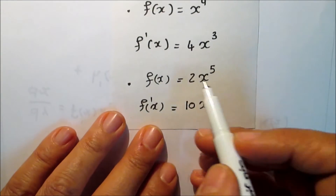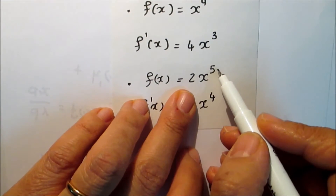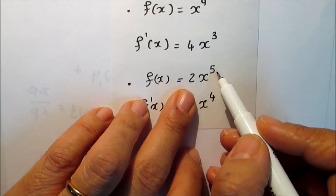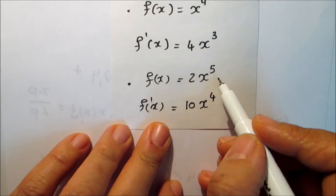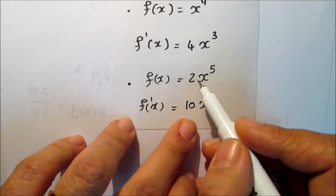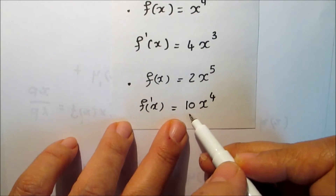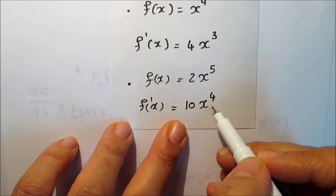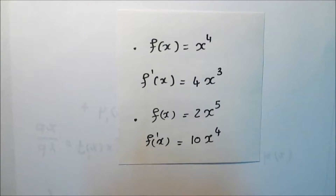Another example: if f(x) equals 2x to the power 5, then f', the first derivative, equals 2 times 5, which is 10, times x to the power 4. Remember, the first derivative of a constant equals 0.